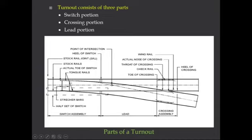The tongue rail floats and, with respect to the heel of switch acting just like a hinge, it sits over slide chairs. The slide chairs are greased so the tongue rail can move freely — either way — to set the point for main line or loop line movement. This is about the switch portion.